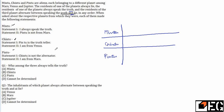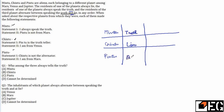Chintu can either be a liar or an alternator. If we assume Chintu is a liar, then Chintu said 'Pintu is the truth-teller,' which means Pintu cannot be the truth-teller because Chintu is lying. So if Pintu cannot be the truth-teller and Chintu is the liar, then Mintu needs to be the truth-teller and Pintu will be the alternator.